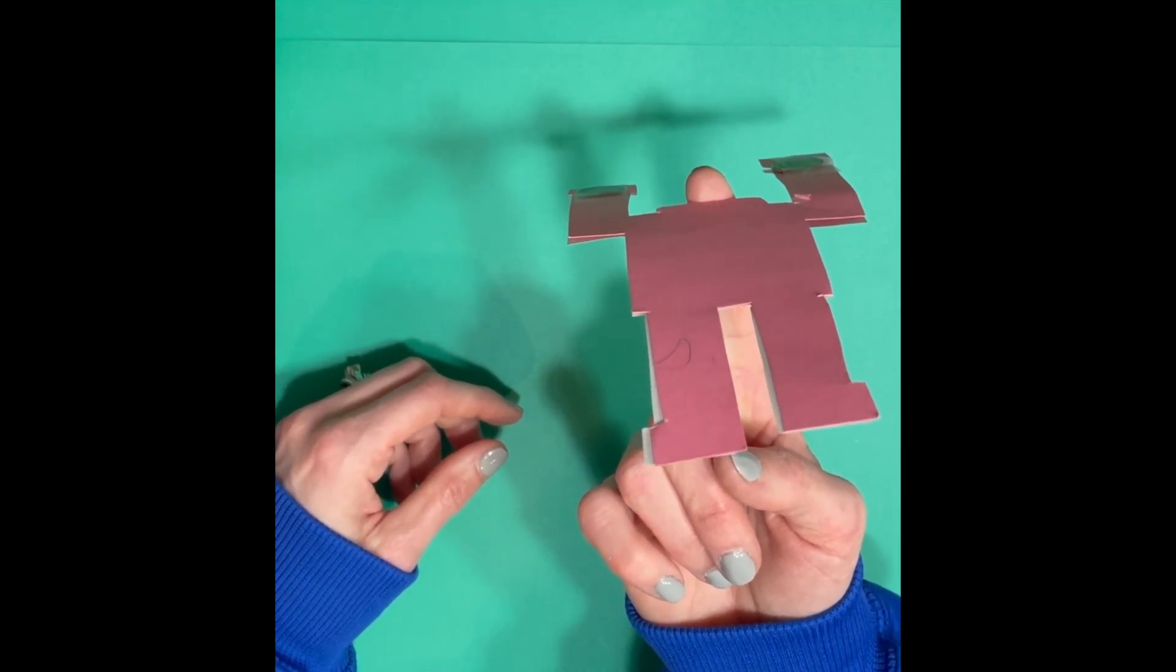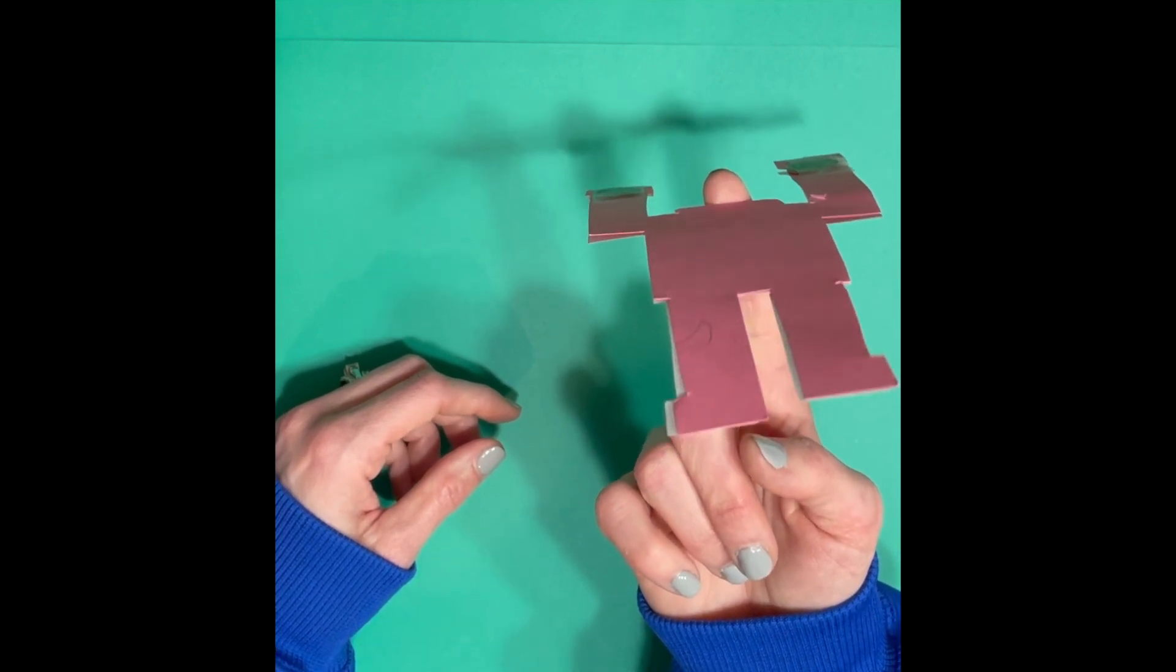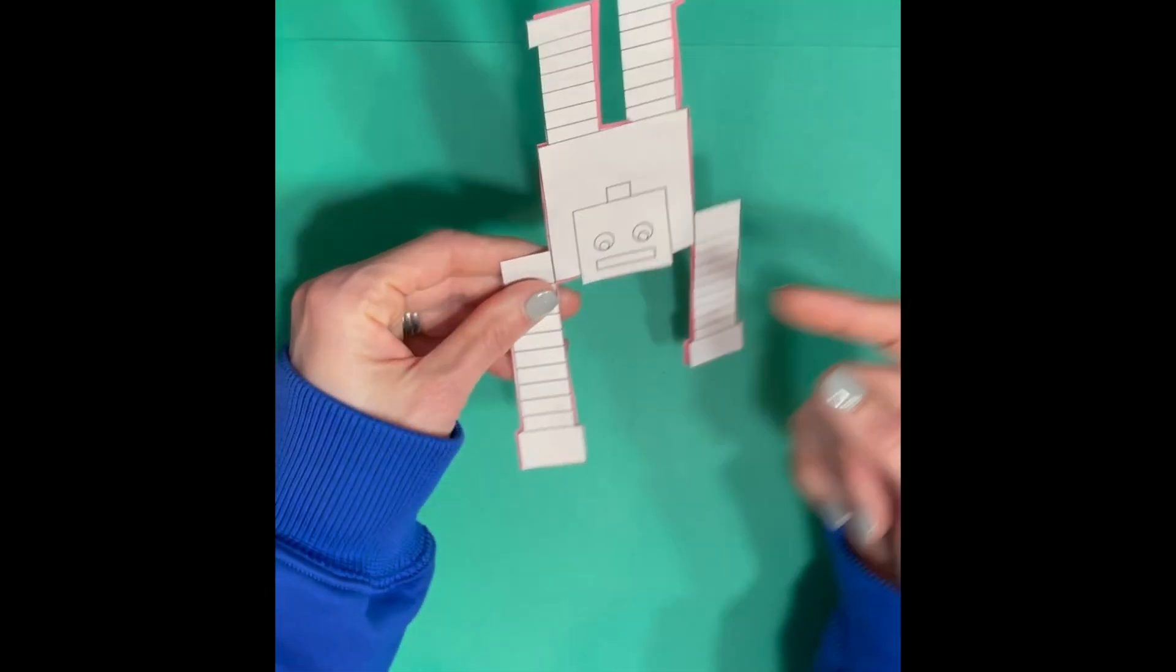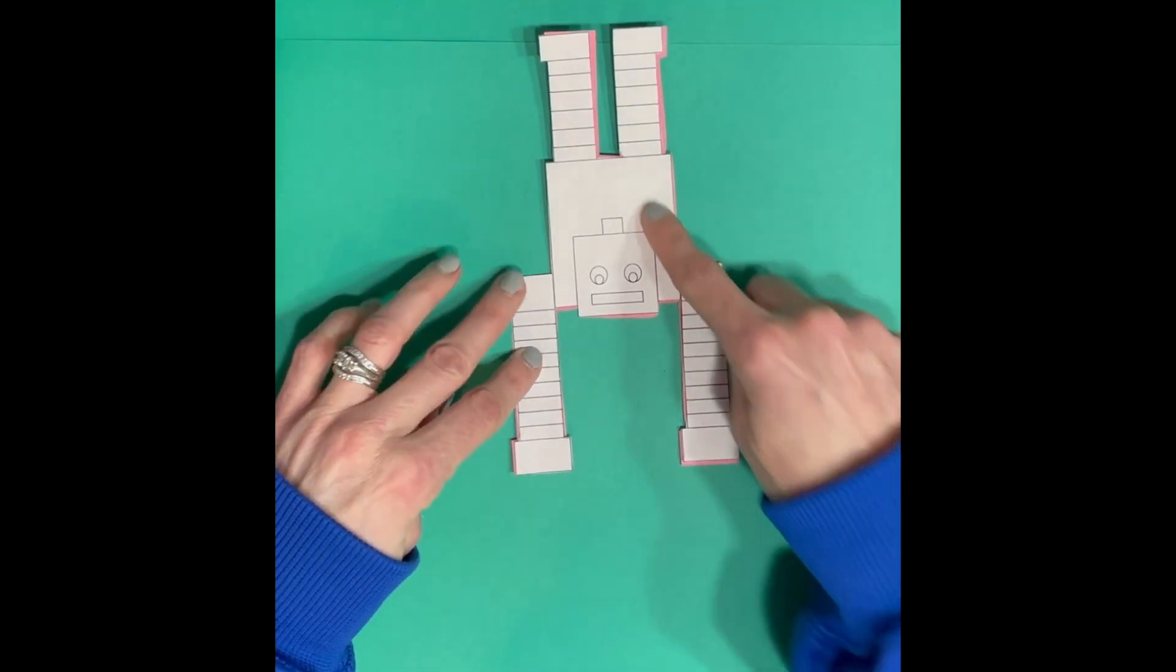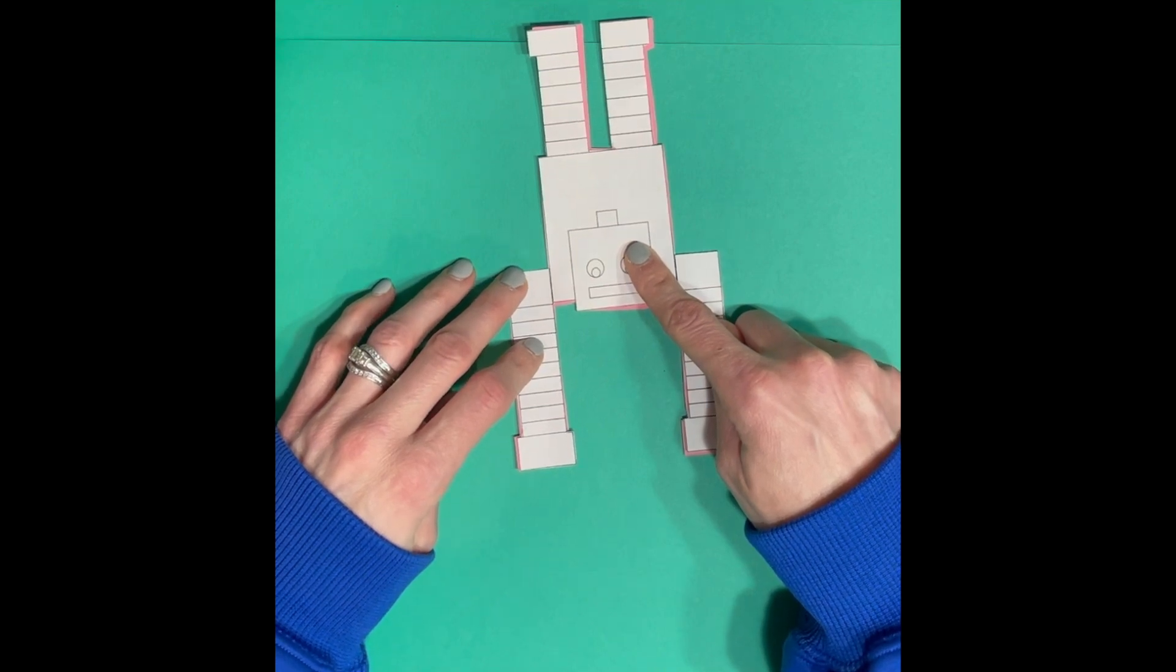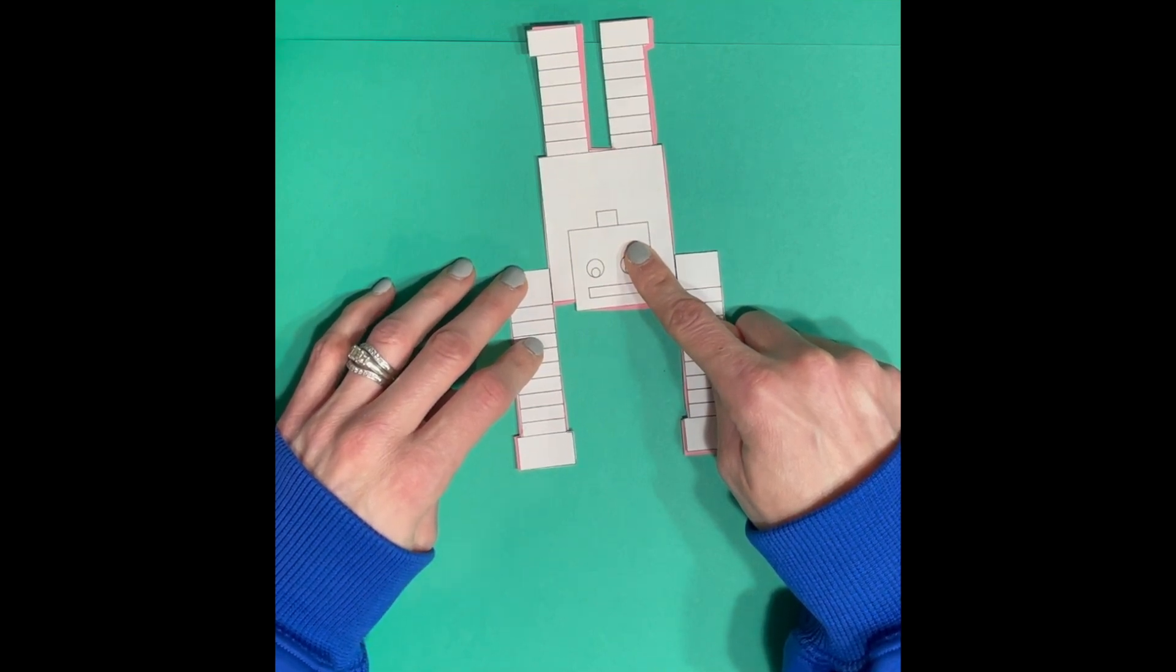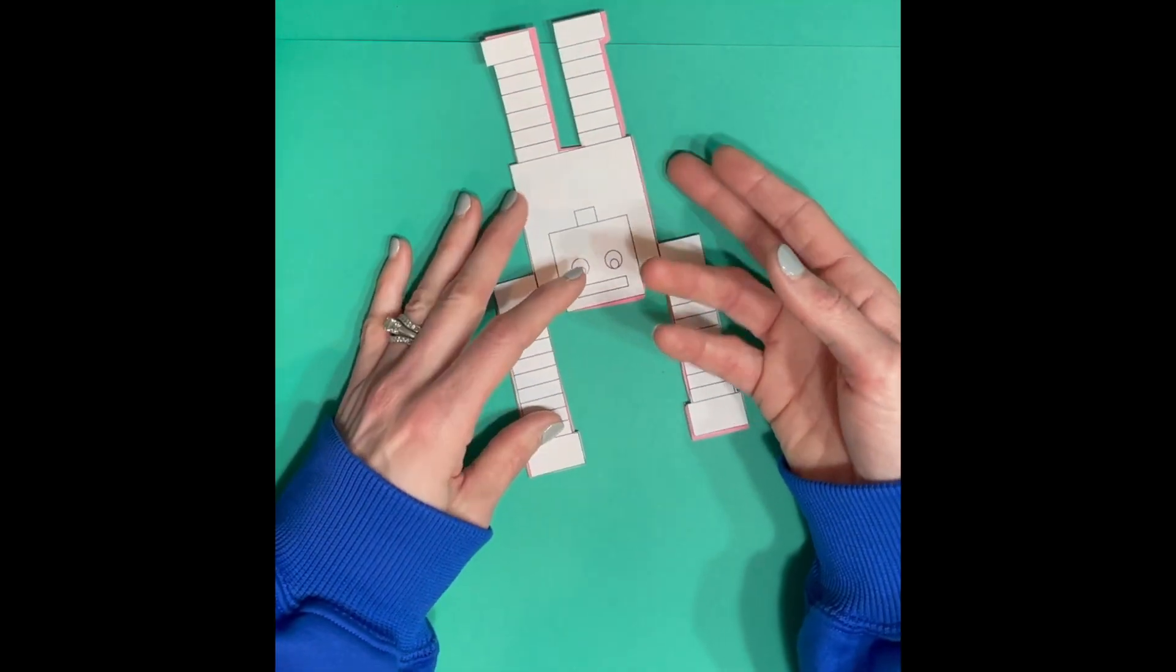The robot's center of gravity is in the middle because we have the same two legs and the same arms and everything's the same. This goes along with your leaf glider when we talked about symmetry. You have the same thing on each side, so the weight should be distributed evenly.